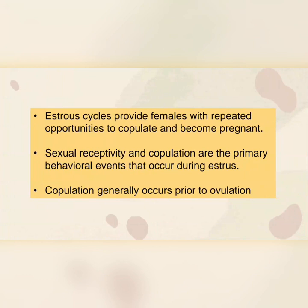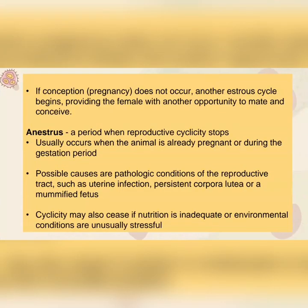Sexual receptivity and copulation are the primary behavioral events that occur during estrus. Copulation generally occurs prior to ovulation. If conception or pregnancy does not occur, another estrous cycle begins, providing the female with another opportunity to mate and conceive.